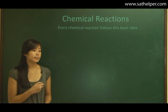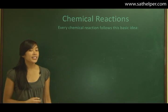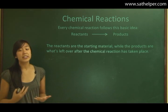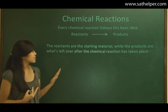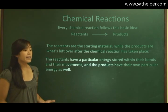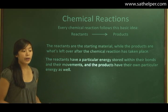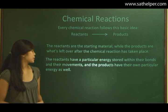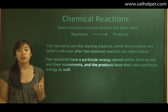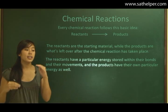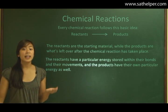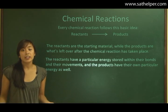Every chemical reaction follows the same basic idea: you have reactants, and then they yield products. The reactants are the starting material, while the products are what's left after the reaction. The reactants have a particular energy stored within their bonds, and the products have their own energy as well. The difference between these energy levels determines whether the reaction is endergonic or exergonic.